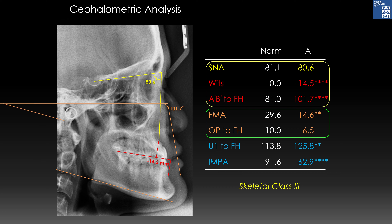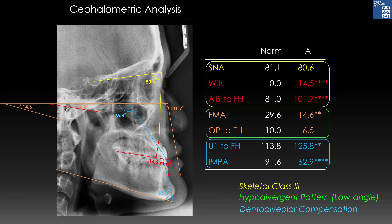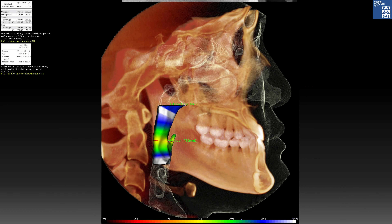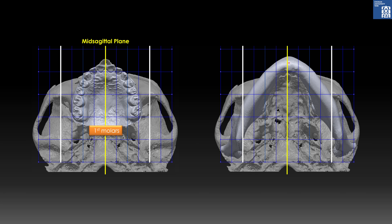Frankfurt mandibular plane angle was only 14.6 degrees, and occlusal plane angle was flat at only 6.5 degrees, indicating a hypodivergent pattern. Maxillary incisors were proclined and mandibular incisors were retroclined, indicating anteroposterior dental alveolar compensation to this skeletal Class 3. AOB was within normal range. Maxillary arch was 2.5 mm wider on the left side due to transverse dental alveolar compensation to the 2.5 mm mandibular shift to the left. Left gonion was also positioned 3.3 mm more laterally.